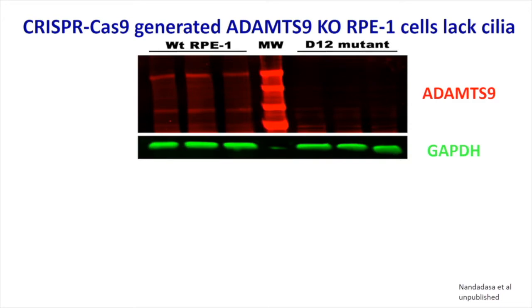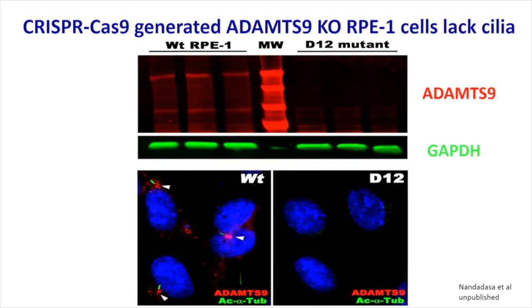We've made cells lacking ADAMTS-9. These RPE1 cells don't express ADAMTS-20, so knocking out ADAMTS-9, as seen on the western blot, is sufficient to remove functional enzyme for both genes. In turn, those cells have a complete absence of cilia, as shown here. ADAMTS-9 is recycled by clathrin-mediated endocytosis and taken to specific vesicles at the base of the cilium.